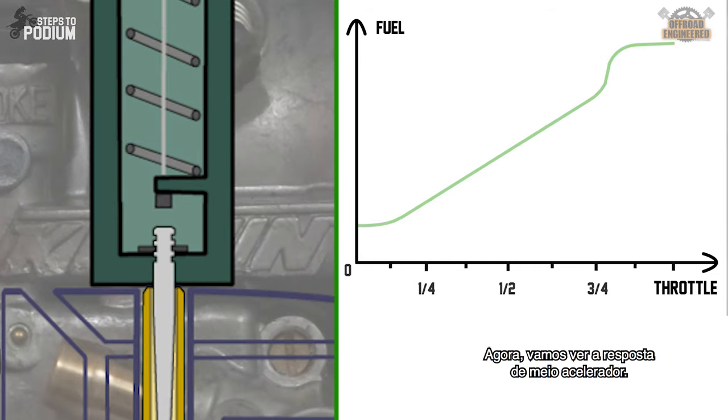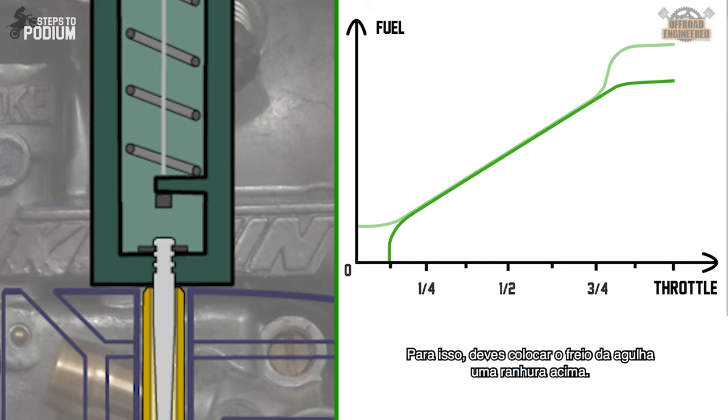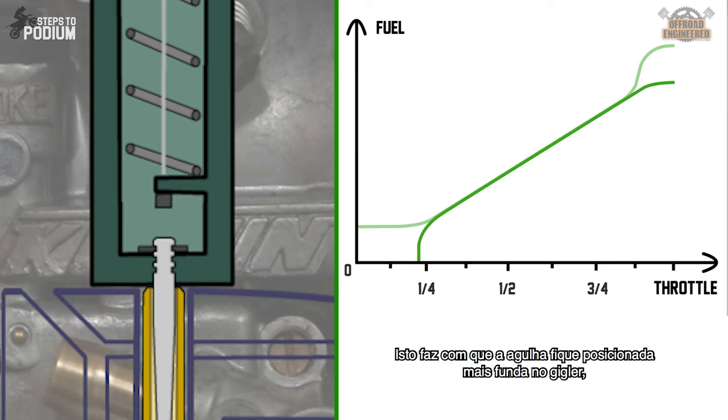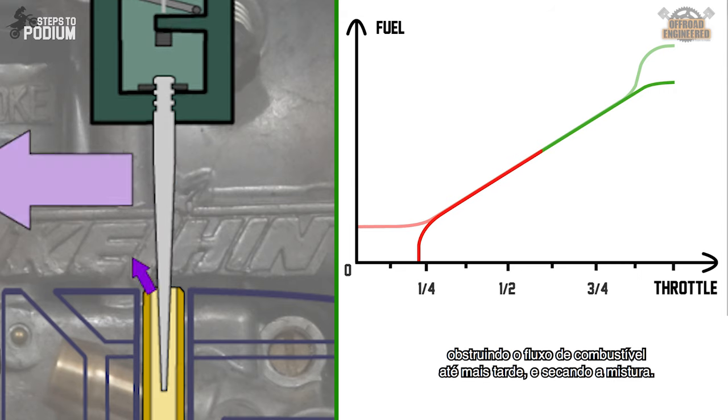Now let's take a look at the mid throttle response. If you feel the bike bogging too much, it's because the mixture is too rich and you have to lean it up. To do that, take the needle and place the circlip a groove higher. This will position the needle lower on the needle jet and it will obstruct the fuel flow for longer, leaning out the mixture.